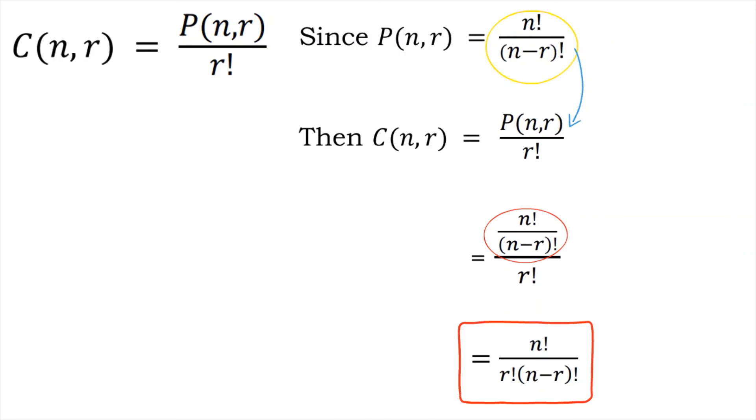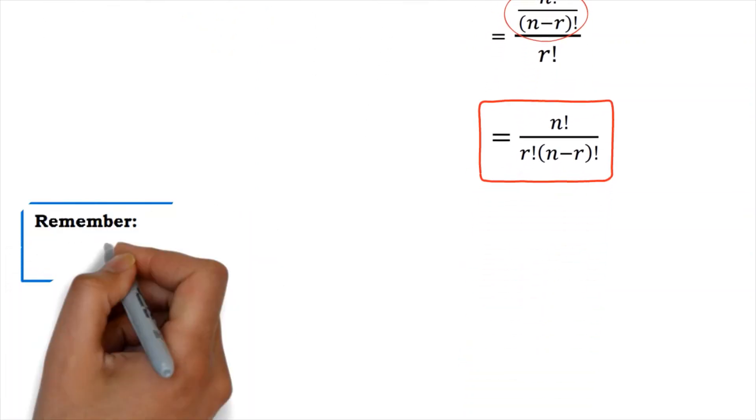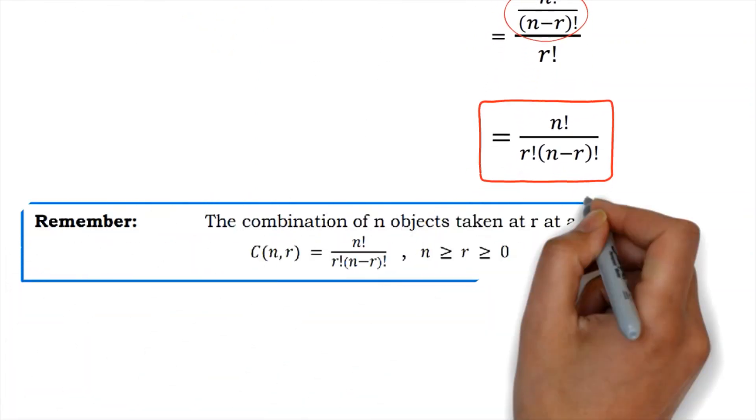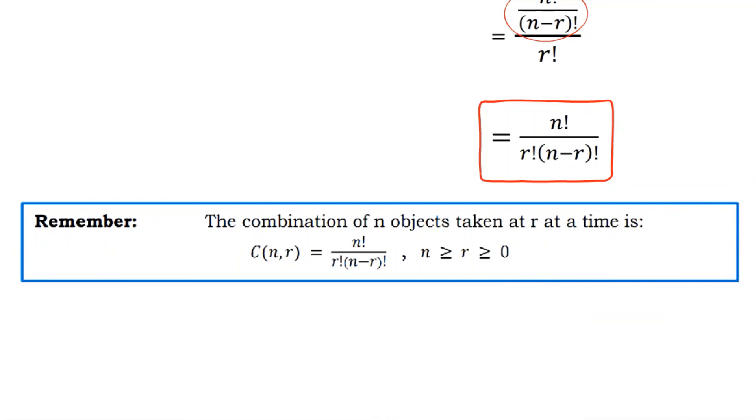So that is how the formula for the combination was derived. Remember, the combination of n objects taken r at a time is C(n,r) equals n factorial divided by r factorial times (n minus r) factorial, where n is greater than or equal to r, and r is greater than or equal to 0.